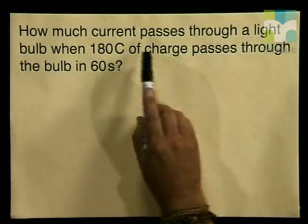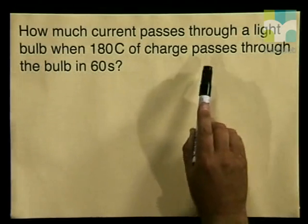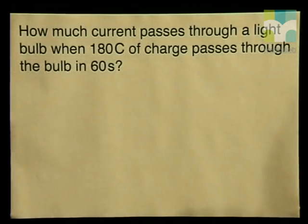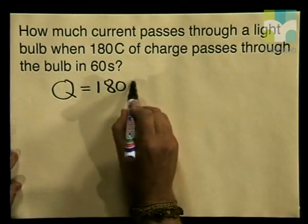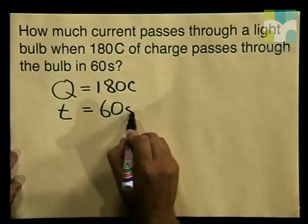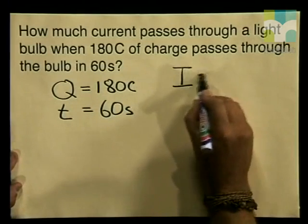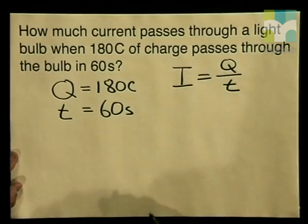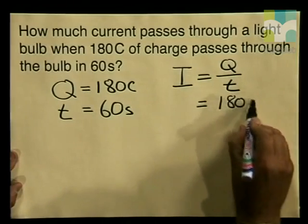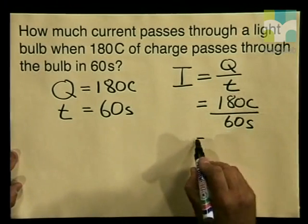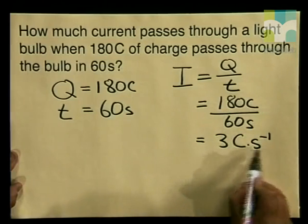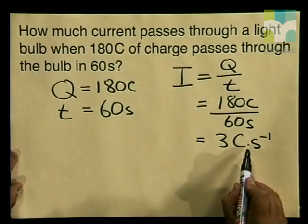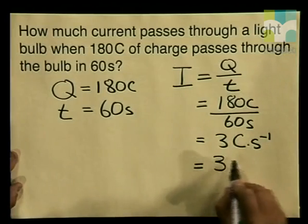Let's make sure that you understand this formula by using it in a calculation. How much current passes through a light bulb when 180 coulombs of charge passes through the bulb in 60 seconds? First of all, we must write down our important values. Q, the amount of charge, is 180 coulombs, and T, the time taken, is 60 seconds. Our equation is I equals Q divided by T. Substituting in the values: Q is 180 coulombs and T is 60 seconds. 180 coulombs divided by 60 seconds gives us 3 coulombs per second. We know that coulombs per second is the unit of current, which is the same as the ampere. Therefore, we can write the answer as 3 amperes.